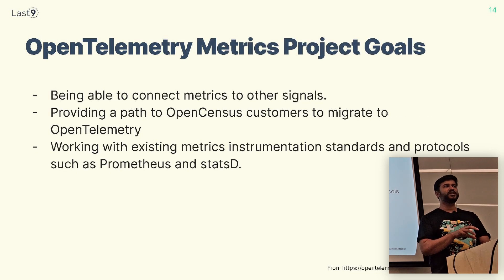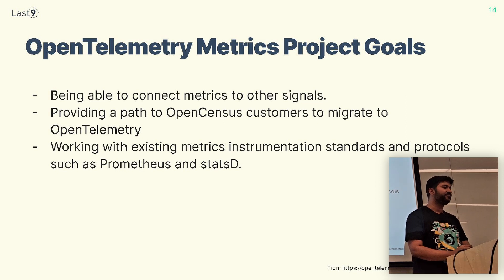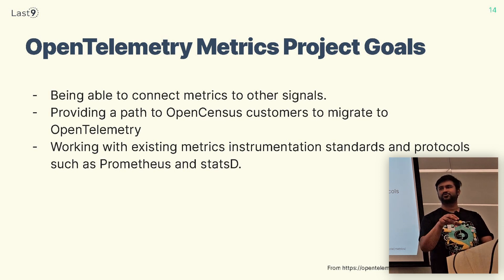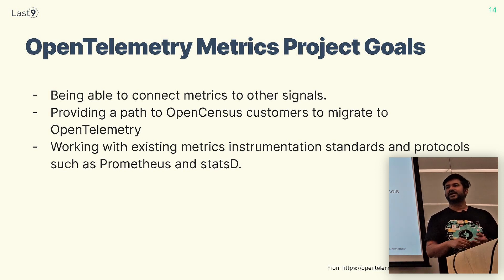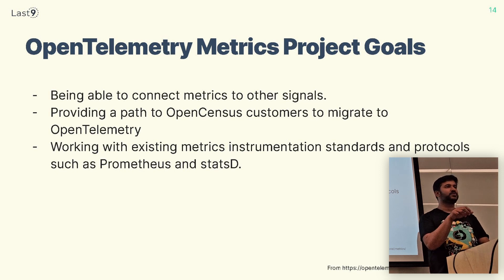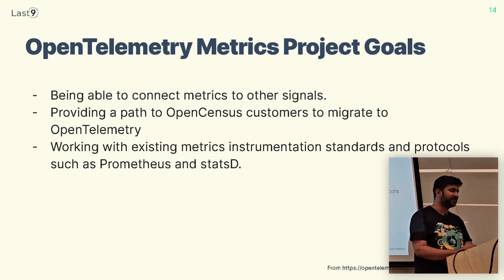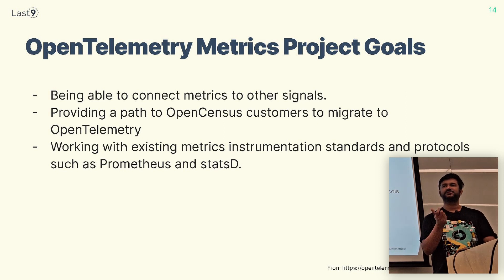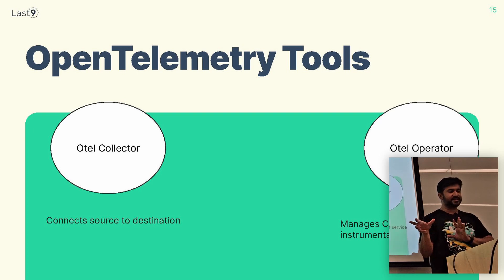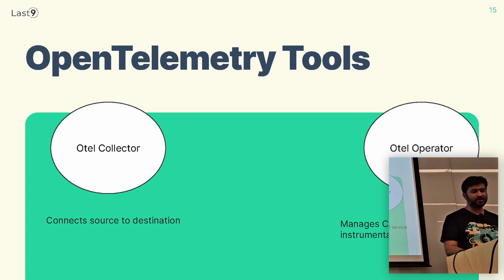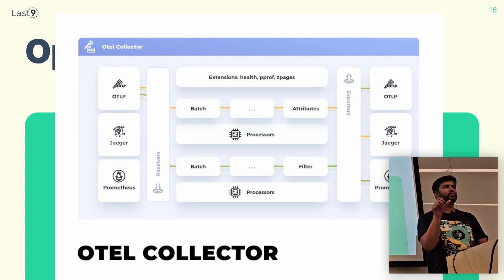With respect to metrics, there were certain project goals when OpenTelemetry decided to support metrics. One goal was to connect metrics to traces and logs. Another was to provide a migration path from the old OpenCensus library so that users can switch to OpenTelemetry. And then working with existing protocols like Prometheus, where people can switch between the two tools and leverage existing tooling without having to learn something completely new. The OTel collector plays a very pivotal role in the whole ecosystem.